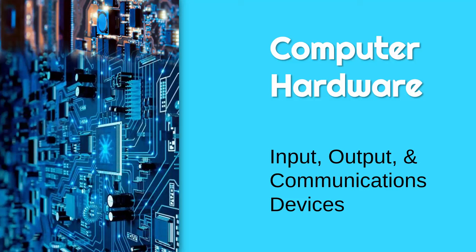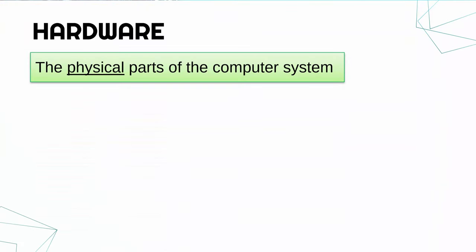Hello, this is the first of quite a few videos focusing on computer hardware, starting now by categorizing hardware as being either input, output or communications devices. So before we get started on those categories, let's just define what hardware is. Hardware are the physical parts of the computer system. If you can touch it, it's physical and it's part of the computer, it must be hardware.